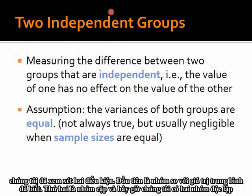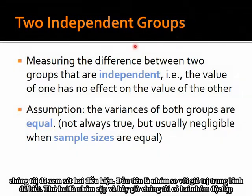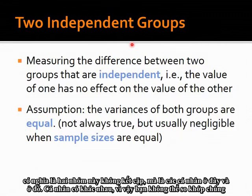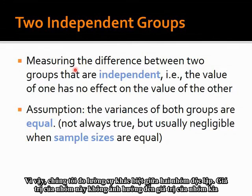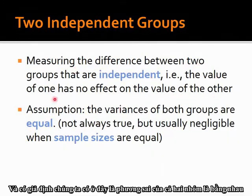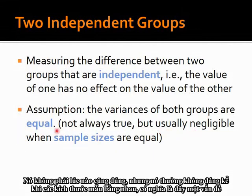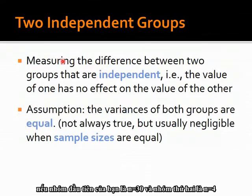Now we have two independent groups — not paired. There are two groups, but the individuals in each group are different, so we can't match them. We measure the difference between two independent groups where the value of one has no effect on the value of the other. There's an assumption that the variances of both groups are equal, which is usually negligible when sample sizes are equal, but is more of a problem if one group has n equals 30 and the other n equals 40.